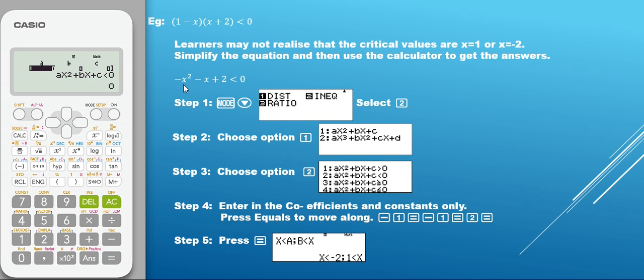So, what are we going to do next? Next, to enter in our A, B, and C values, we look at our question that is being given, and we are going to only enter our coefficients and our constants. What does this mean?